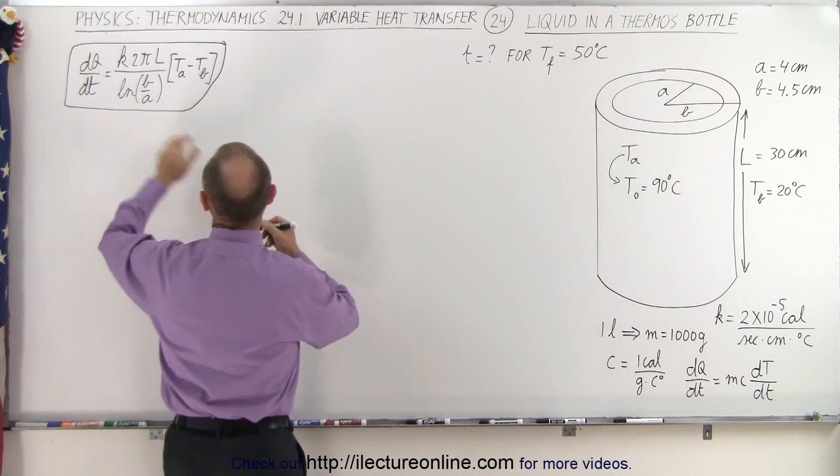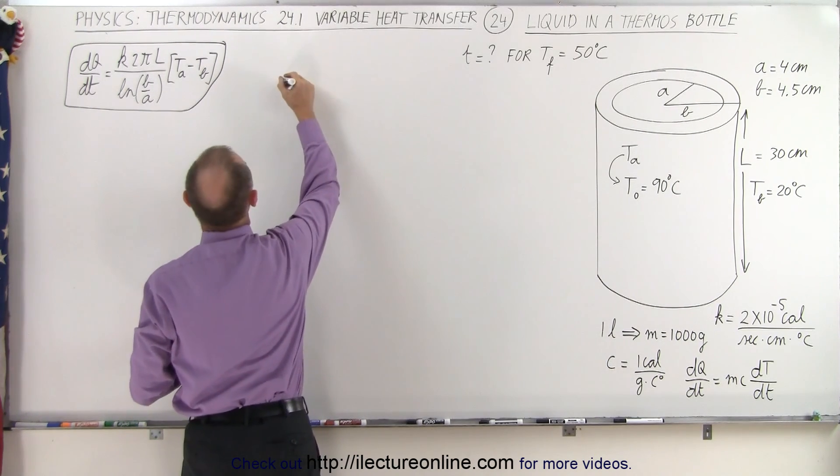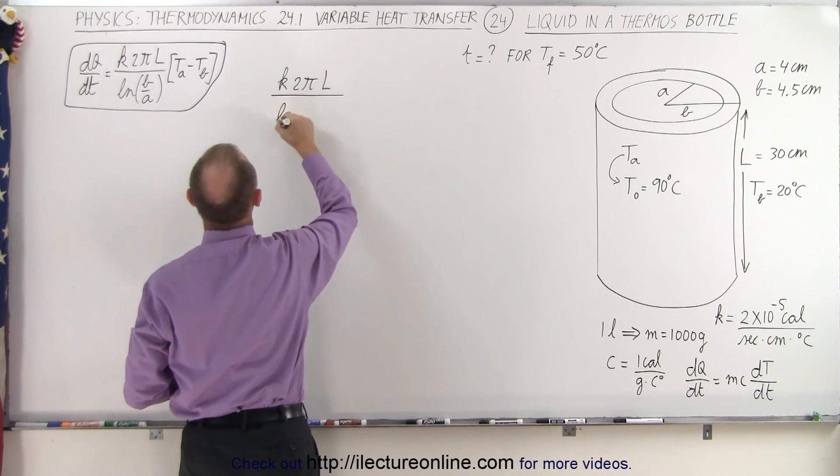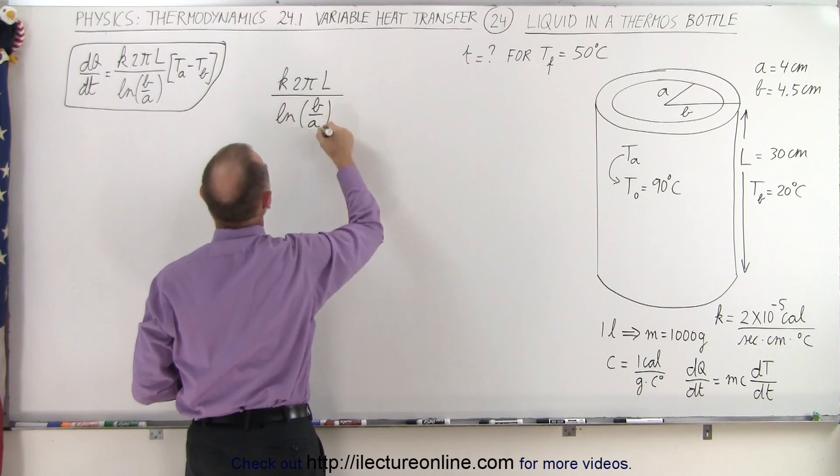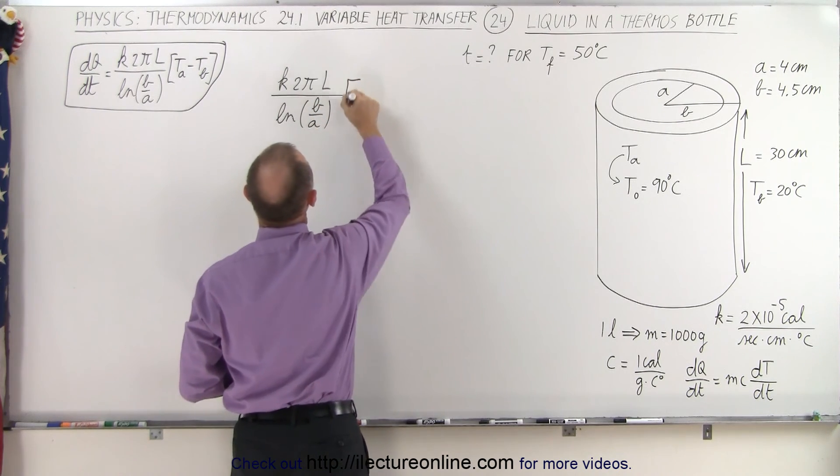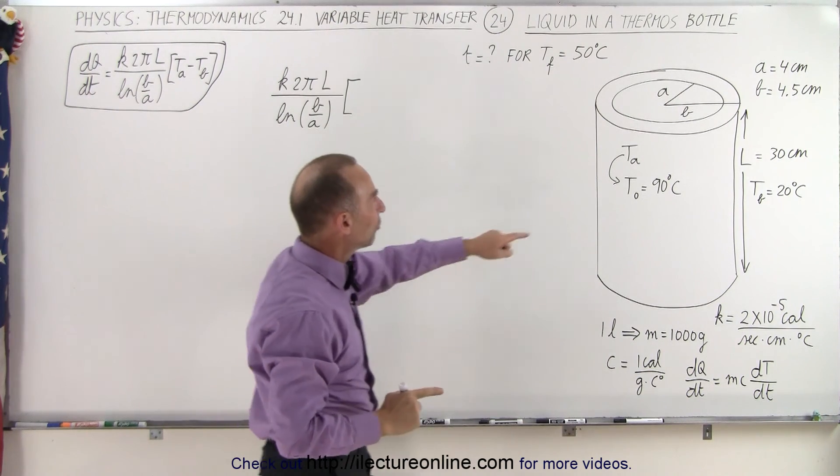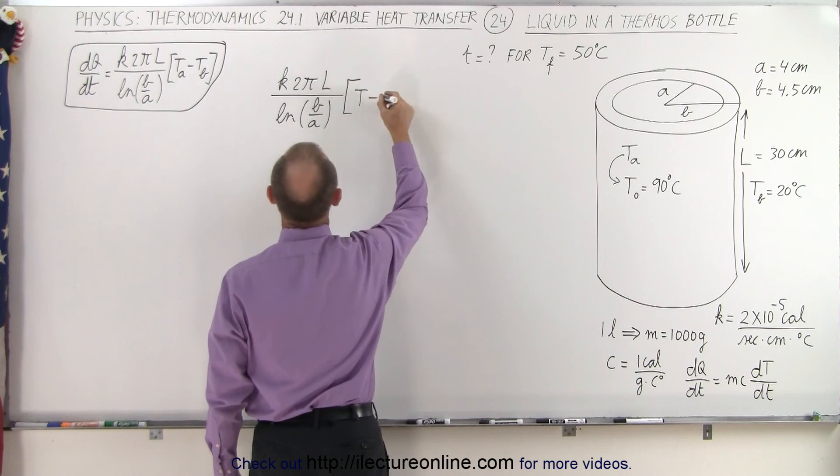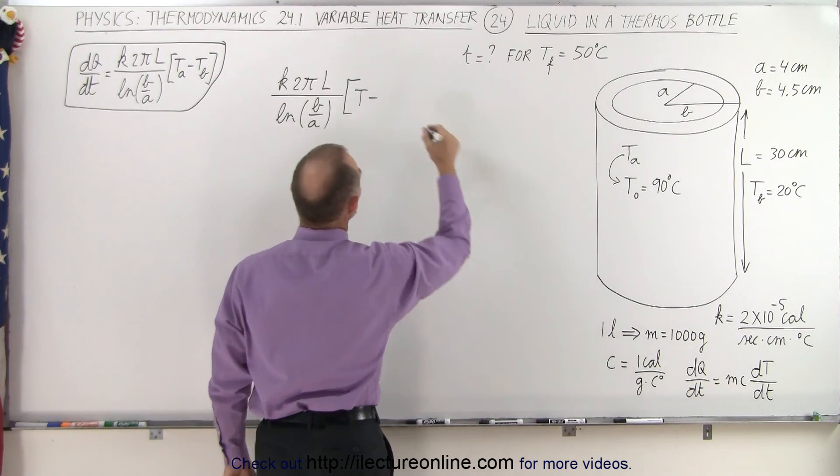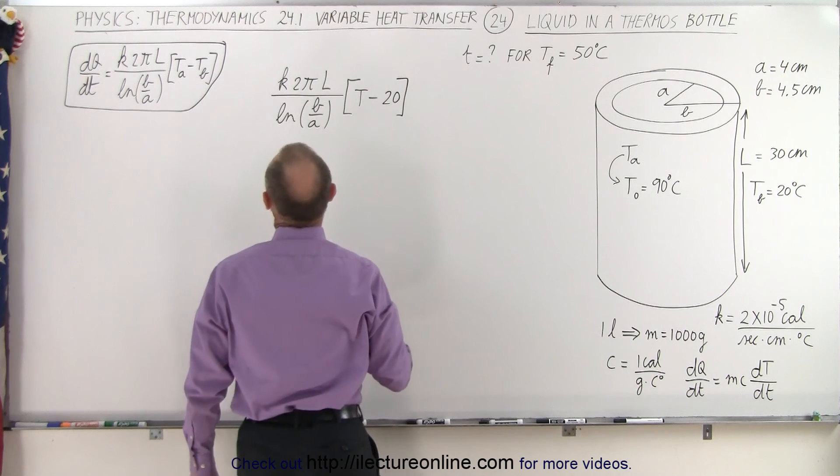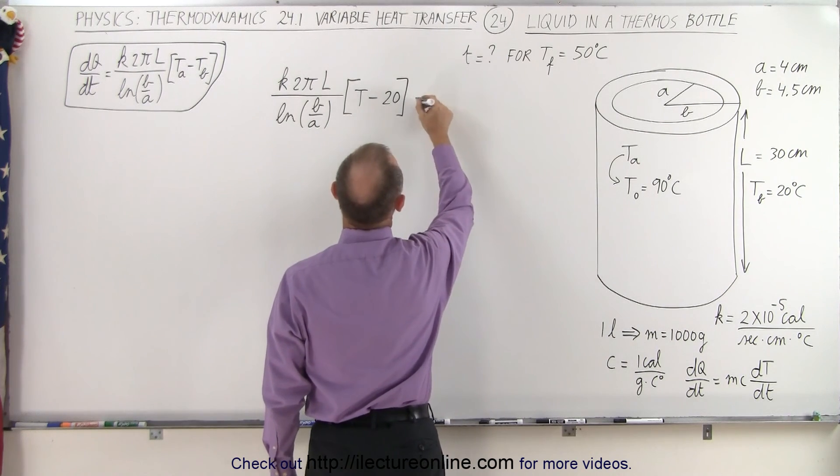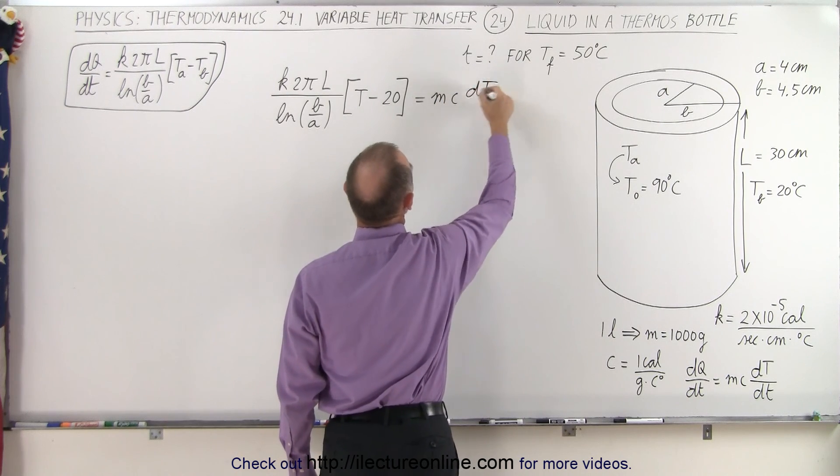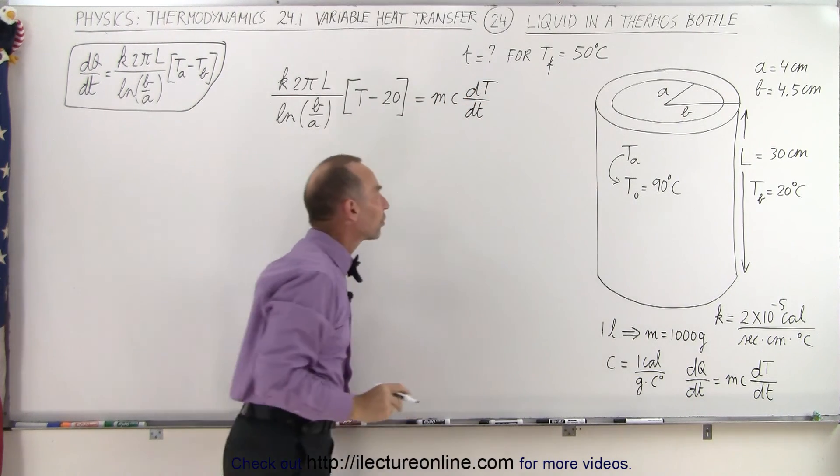So when we set these two equal to one another, we have on the left side K times 2πL divided by the natural log of the ratio of the outer to the inner radius times the difference in the temperature. Now TA is going to be a variable temperature, so let's call that T minus TB which is a constant temperature of 20 degrees. And that's going to be equal to the right side equation which is MC dT over dt, that's temperature over time.